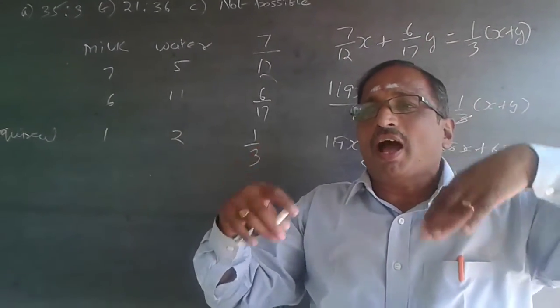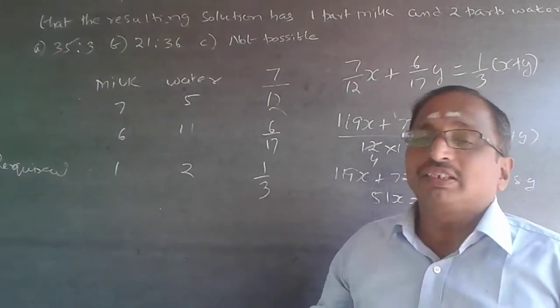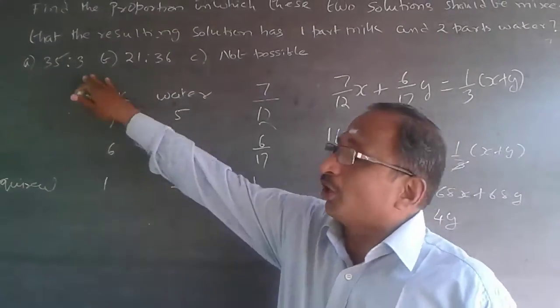So both should not be higher or both should be lower than the required quantity. So just by saying it, you should give the answer as not possible. Don't try to multiply the options.